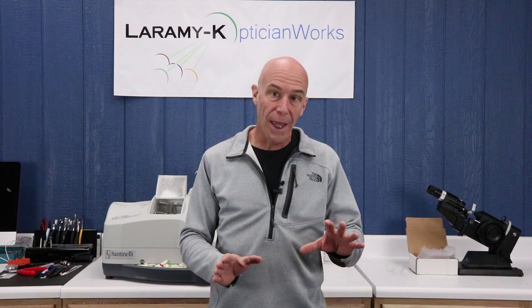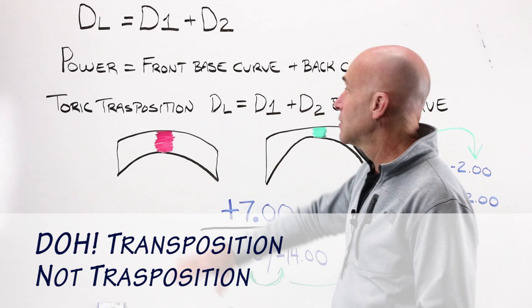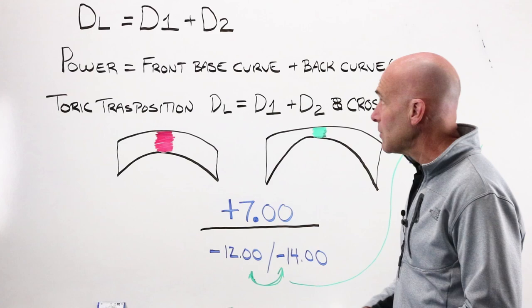It's actually a pretty darn good lesson, and it takes toric transposition and looks at it in three different ways, using three different examples for each of those ways. The nine examples that I'm gonna go through are three, three, and three variations of this basic nominal lens formula, which says that the power of a lens is equal to its front curve added to its back curve.